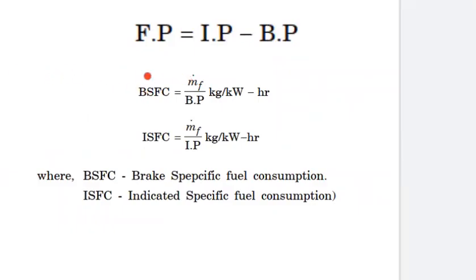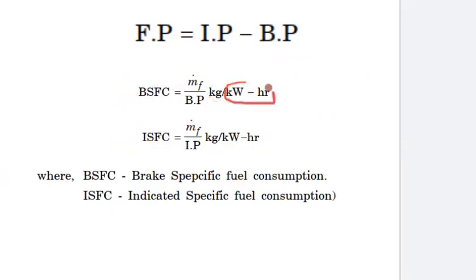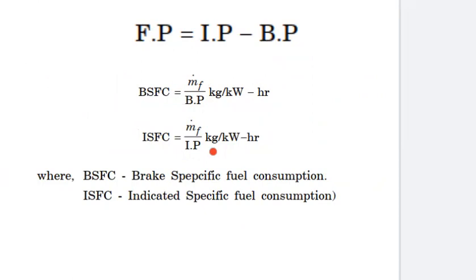The brake specific fuel consumption is BSFC. The indicator specific fuel consumption is ISFC. The unit is kilogram per kilowatt hour. BSFC equals fuel mass flow rate M-dot divided by BP, and ISFC equals fuel mass flow rate divided by IP.